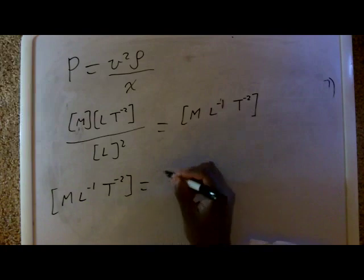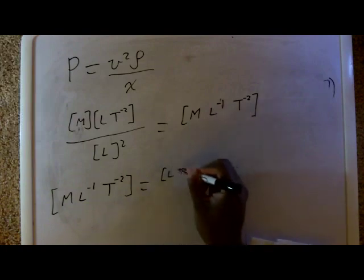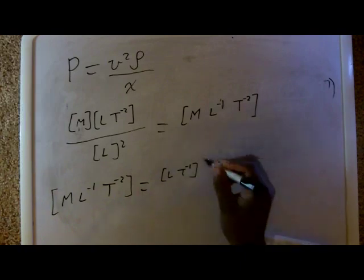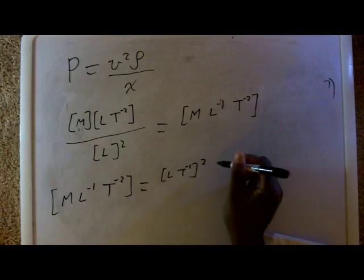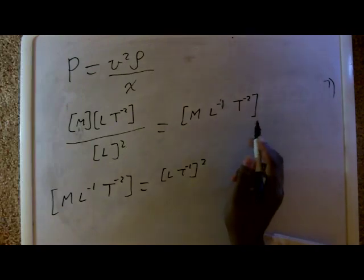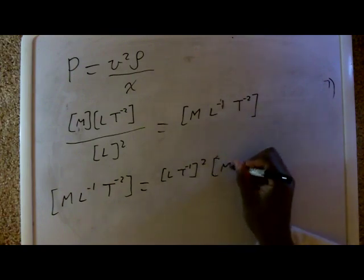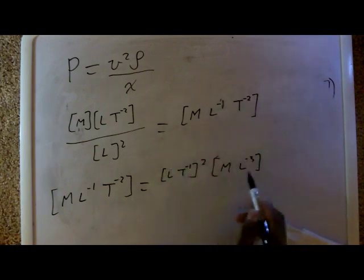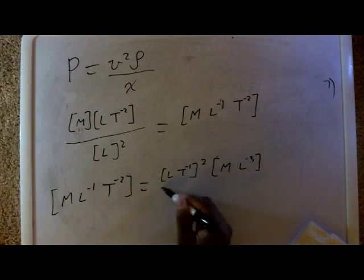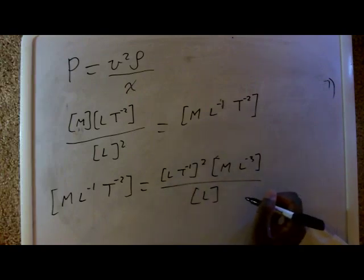Velocity is length over time, and these are squared. This times rho, which is mass density. And mass density is, just taking my word for it, I'm not going to go through all the steps to show you that this is mass density. But this is mass density over length.